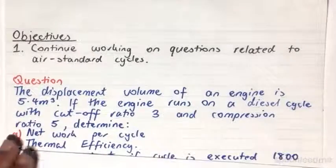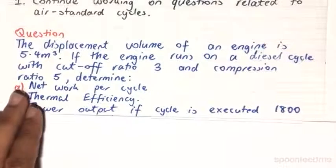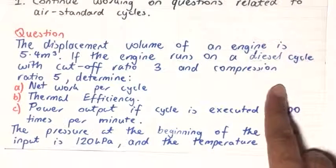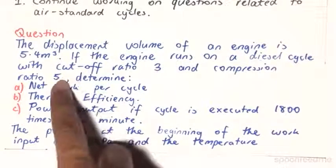The displacement volume of an engine is given to be 5.4 cubic meters. If the engine runs on a diesel cycle with a cut-off ratio of 3 and a compression ratio of 5,